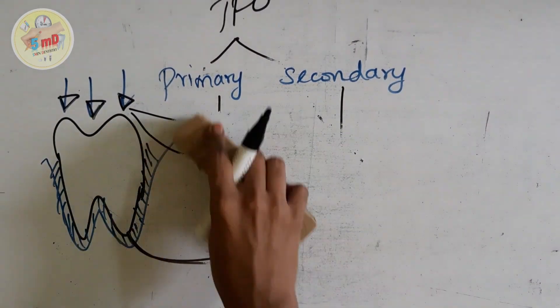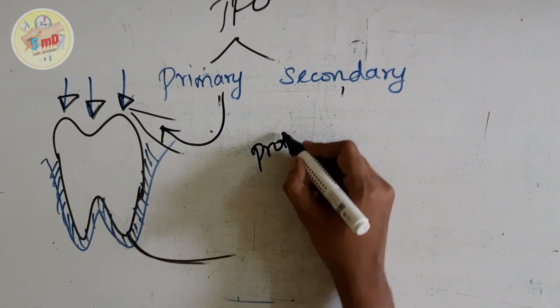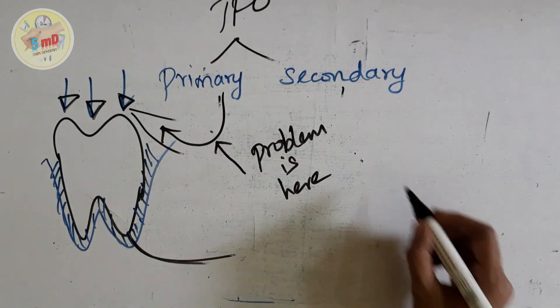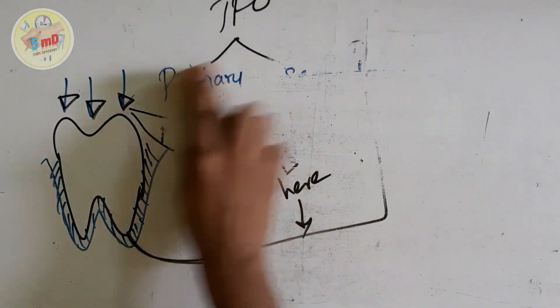Therefore, to summarize, the problem is with the occlusal forces in primary, whereas the problem is with the periodontium in the secondary TFO.